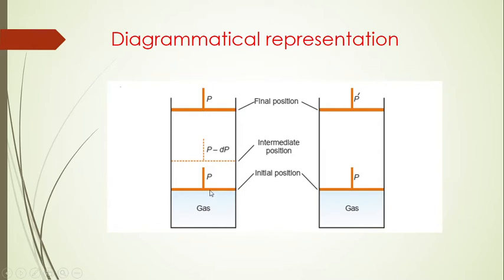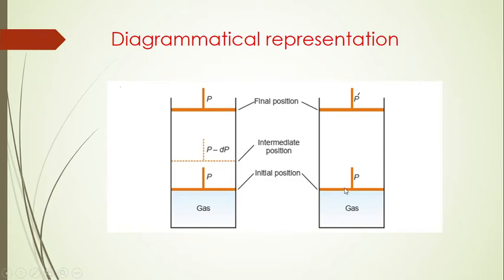In the diagram of a reversible process, at the initial point the pressure on the piston equals the pressure inside the gas. When we reduce the pressure on the piston by a small amount dP, the gas slowly expands upward. The change in pressure is negligible, so equilibrium is maintained at all stages. In the irreversible case, the gas expands suddenly from pressure P to P-prime.